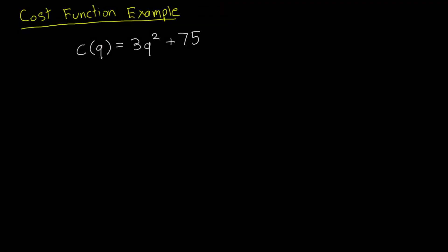Now let's go over an example. The cost function we'll be working with is C = 3Q² + 75. The variable cost is the portion of the cost function that depends on Q, which is 3Q². The fixed cost is the part that does not vary with Q, which is just 75.